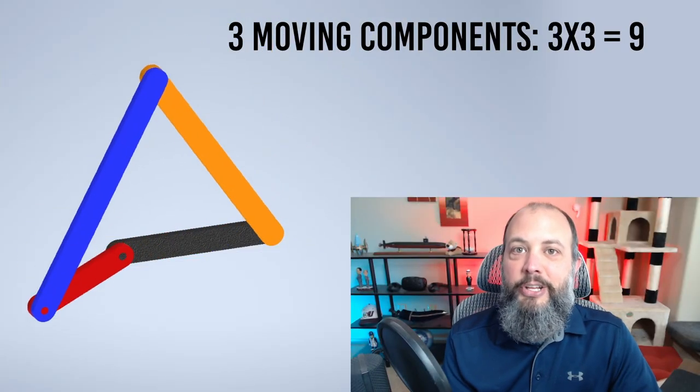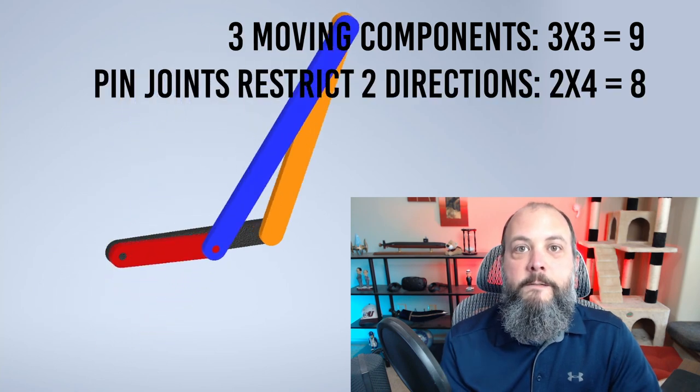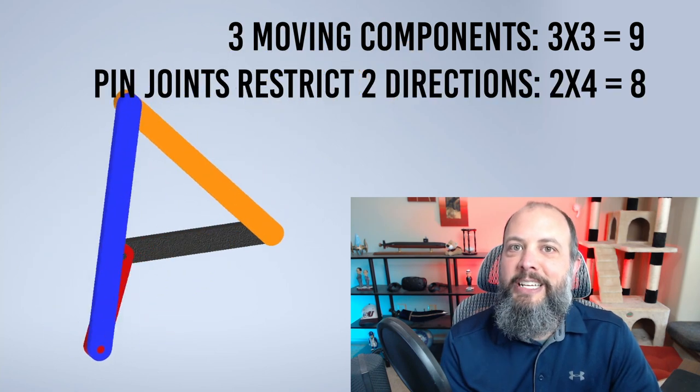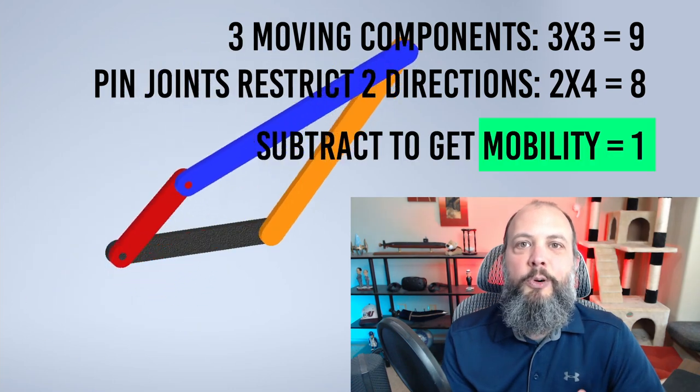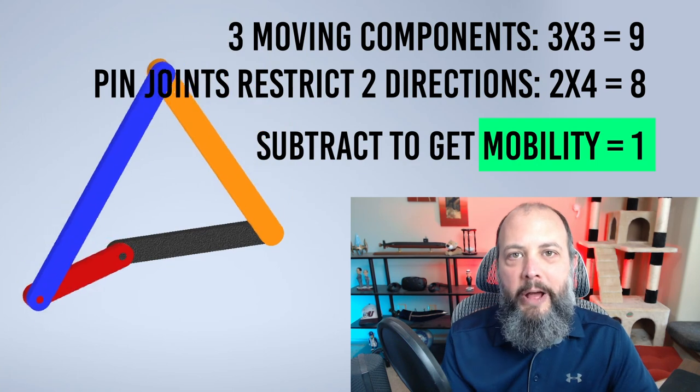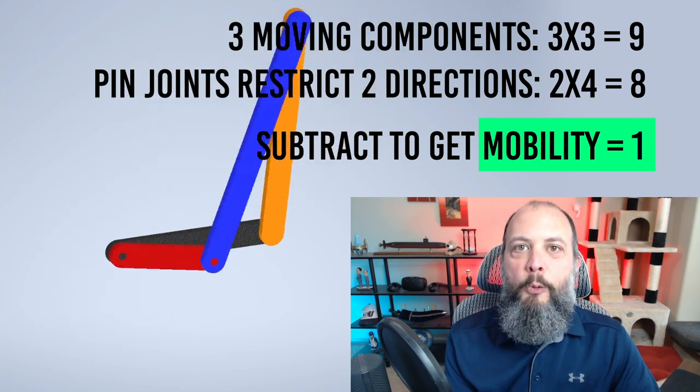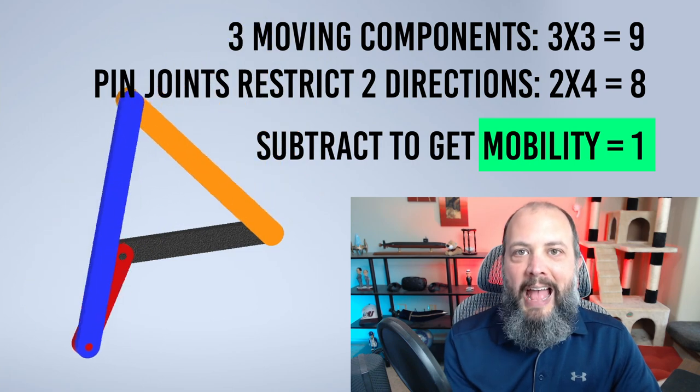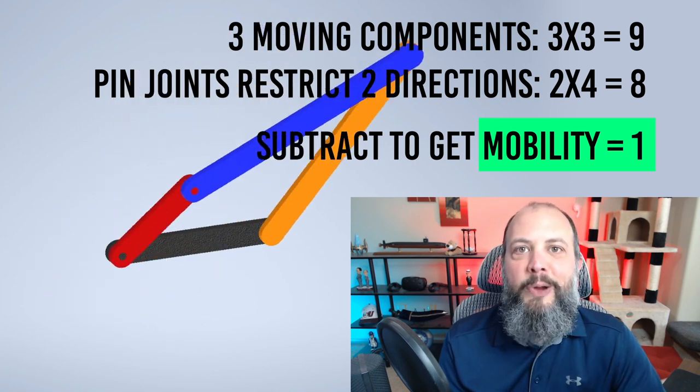So this four-bar linkage has three total links that can move, times three is nine. There are four pin joints which each restrict two directions of motion. Nine minus eight equals one. So a four-bar linkage has mobility of one. That means it has one degree of freedom, or it can be controlled by one single motor, or if you know the angle of just one piece, you can solve for every other angle for the whole rest of the mechanism.